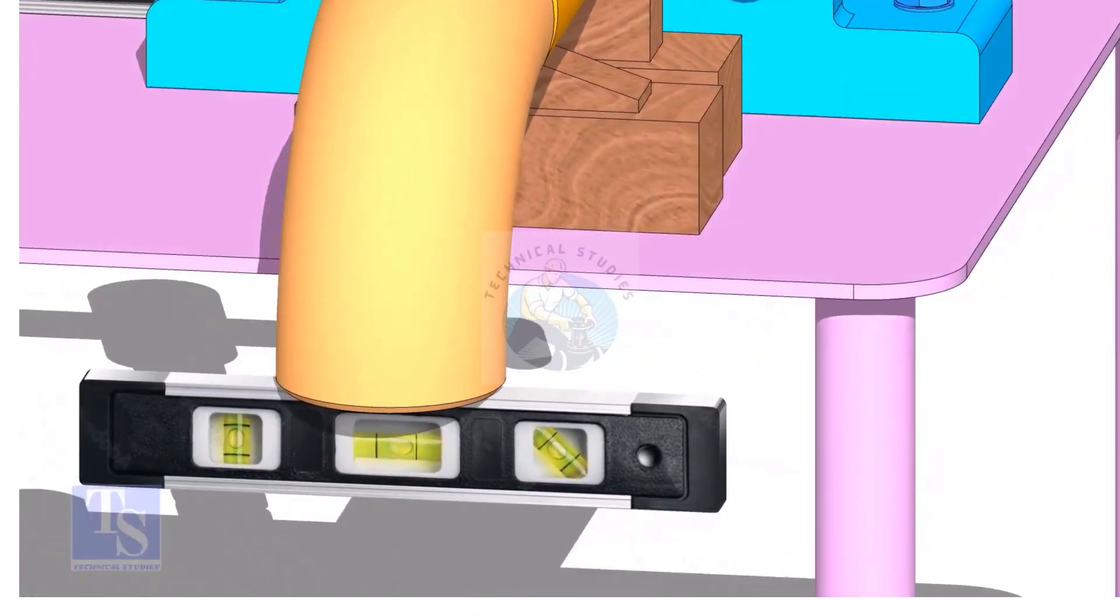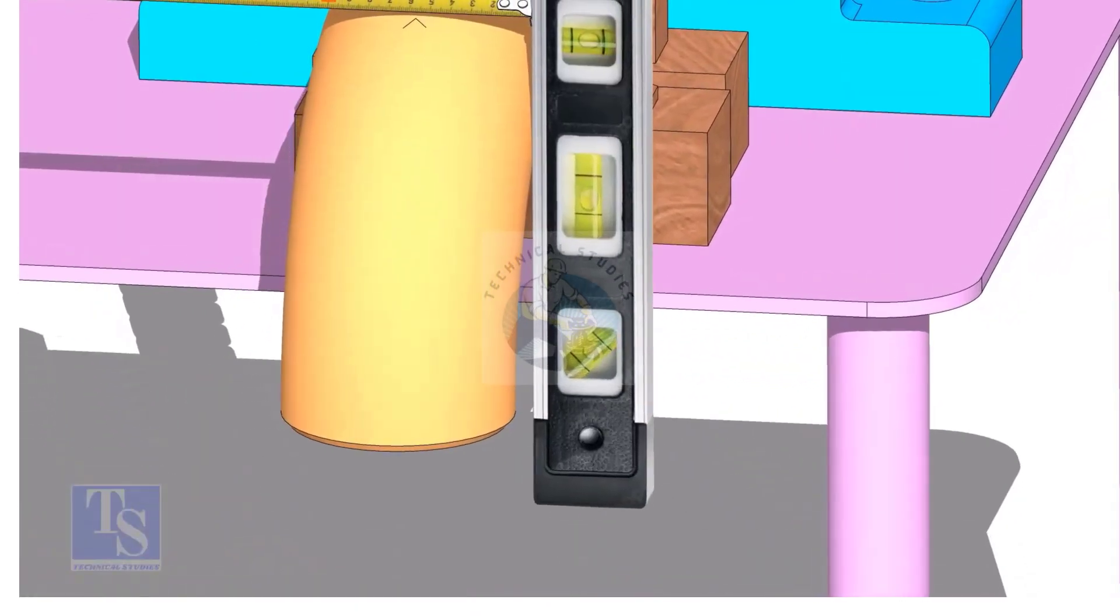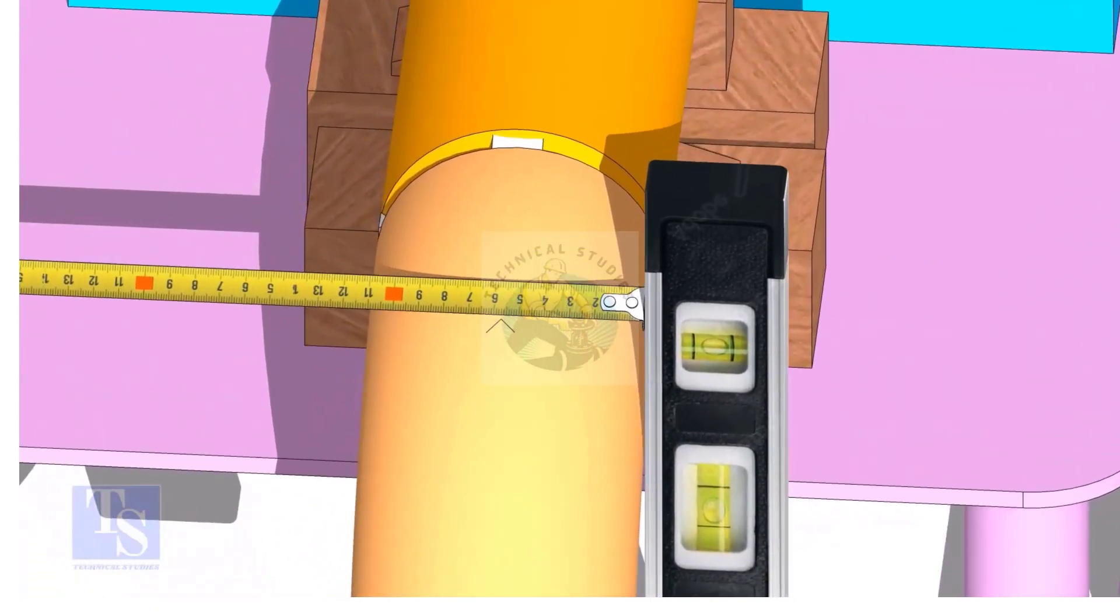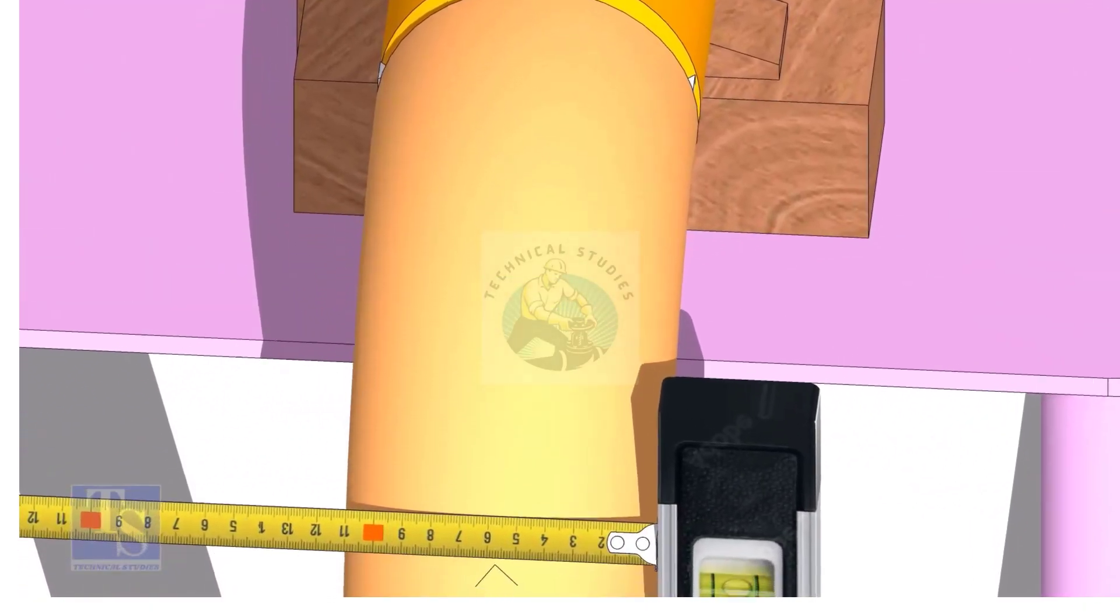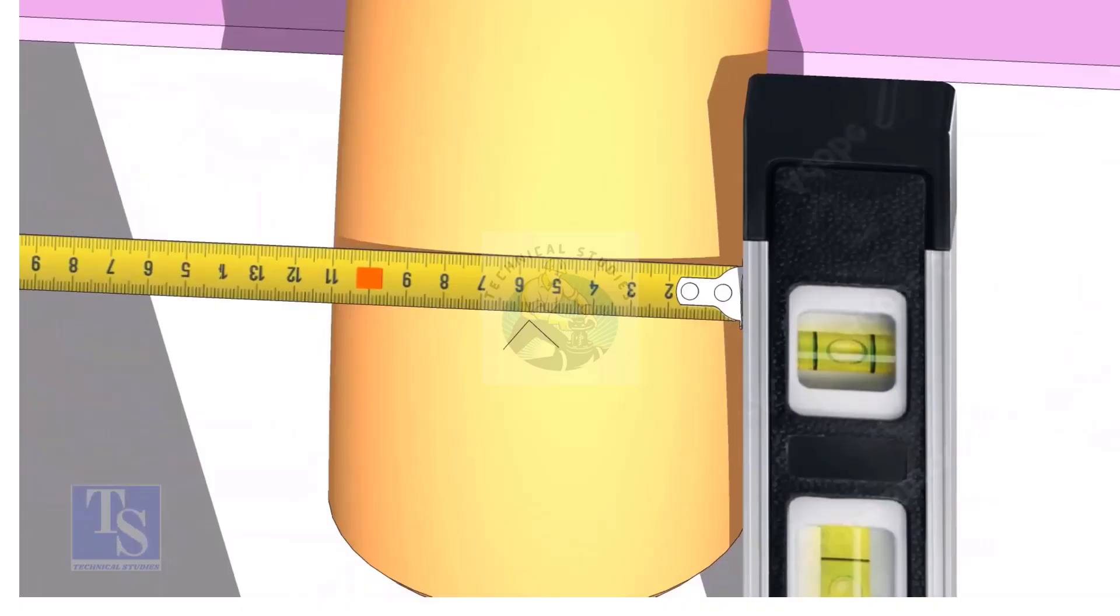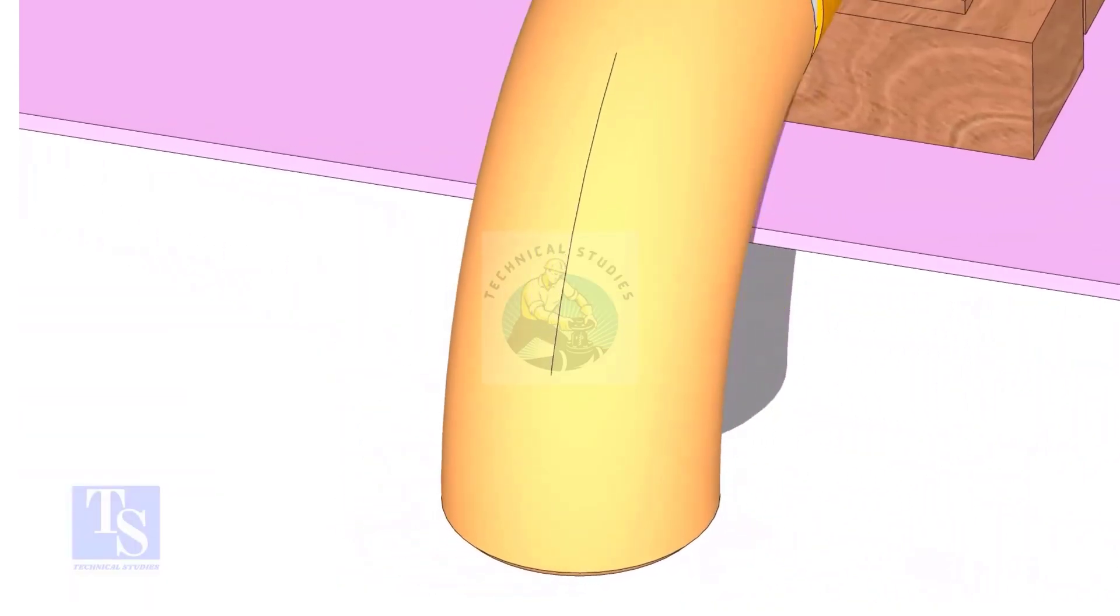Mark the centerline of the elbow. The OD of a four-inch pipe is 114mm. Hold a level bottle at the side of the elbow vertically and mark 57mm on the elbow at least three locations, as shown. Draw a line connecting these marks.